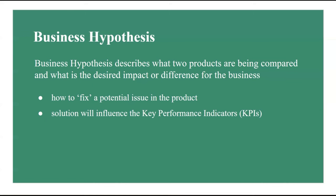Business hypothesis is usually set as a result of brainstorming and collaboration among relevant people on the product team and data science team. The idea is to decide how to fix a potential issue in a product where a solution will improve the target KPI. One example of a business hypothesis is that changing the color of a 'Learn More' button to green will increase the engagement of the web page.